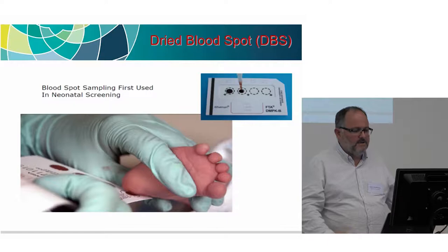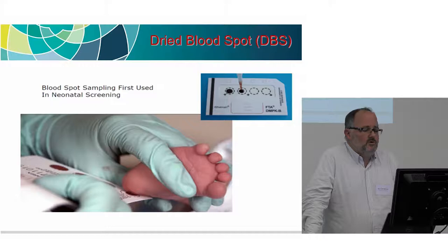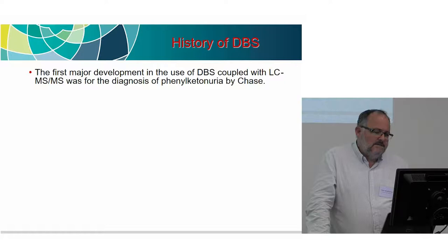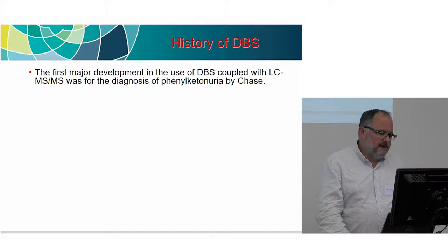What most people think about straight away is newborn screening. Typically in Queensland alone, the newborn screening service does about 70,000 dry blood spots per year — that's just Queensland alone. Going back to Guthrie, he came through and looked at PKU analysis, screening for PKU, and dry blood spots was the ideal matrix. People then started using mass spec for it.